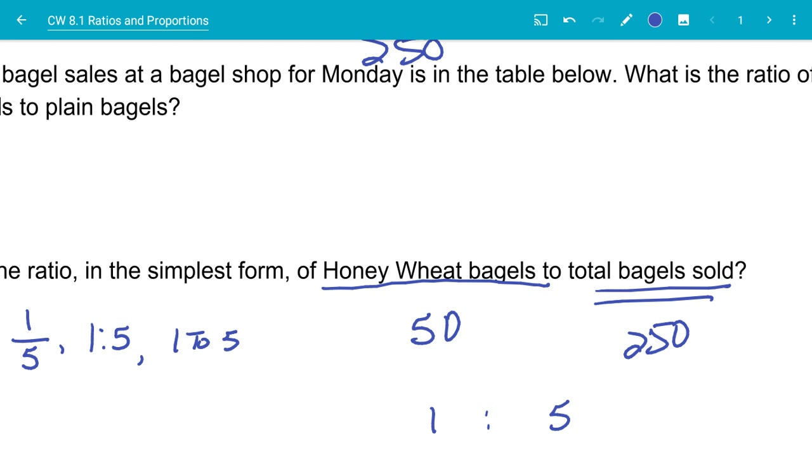So when we take a look at this, if I have the one to five and the 50 to 250, we call these equivalent ratios because this 50 to 250 will actually reduce into the one to five. It's the same exact ratio. So they are called equivalent ratios.